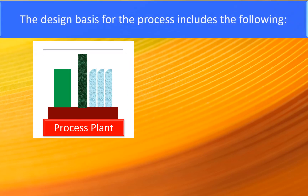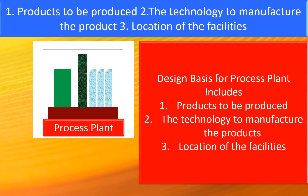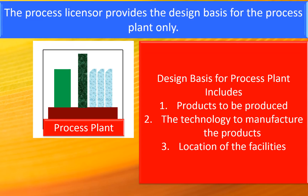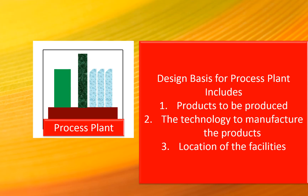The design basis for the process plant includes the following: one, the products to be produced; two, the technology to manufacture the product; three, the location of the facilities. The process licensor provides the design basis for the process plant only. For the support facilities, the design basis is developed and provided by the detailed engineering consultant.